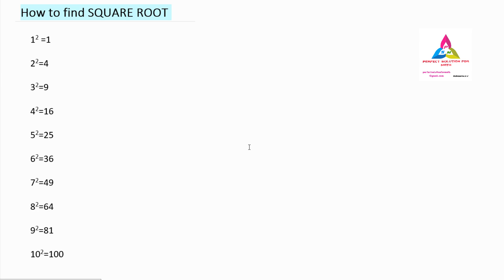Here we can find the square root of any number, but to find the square root of any number, we need to remember some squares. For example, from 1 square to 10 square, we need to know these: 1²=1, 2²=4, 3²=9, 4²=16, 5²=25, 6²=36, 7²=49, 8²=64, 9²=81, and 10²=100.